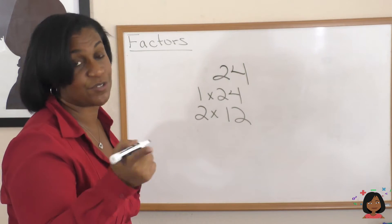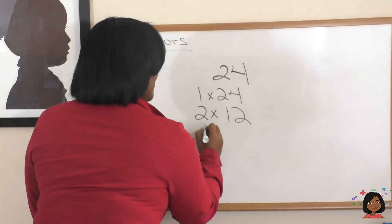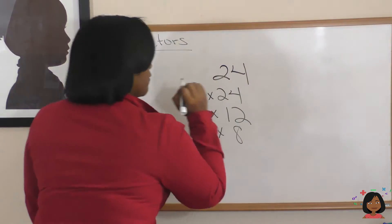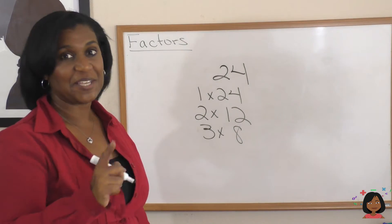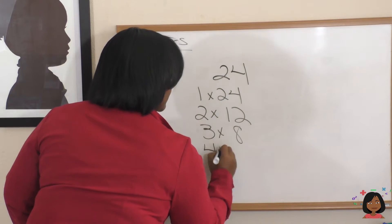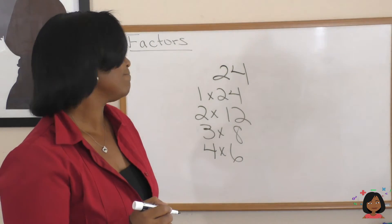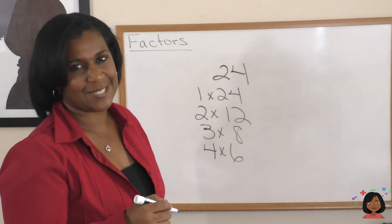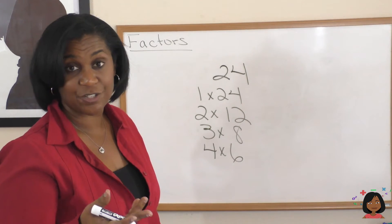What about 3? Does 3 go into 24? 3 times 8. Yes, it does. 3 times 8 is 24. Can we keep going? Does 4 go into 24? Yes, it does. 4 times 6 is 24. What about 5? Does 5 go into 24? Nope, it doesn't. So guess what? I think we're done. These are all of the factors of 24.